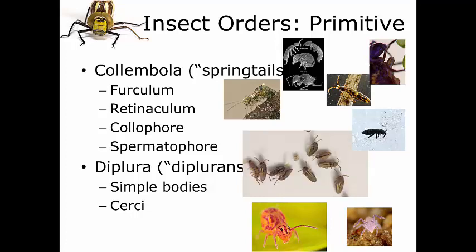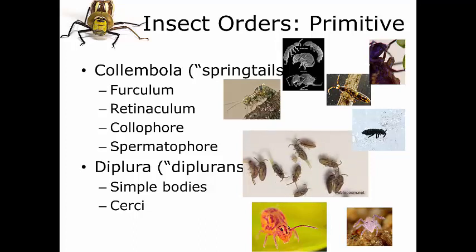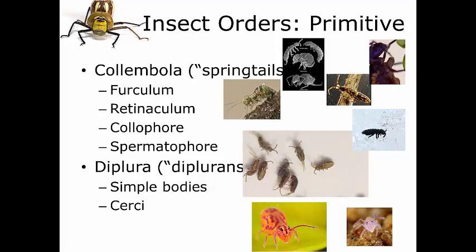Common names are a pain — they're awful. By their very nature, they've been made up by different people at different times. We tend to see lots of different common names based on regions, generations, or heritage of people. Using common names makes it very difficult to discuss an insect across different groups of people. Collembola, for example, are commonly called springtails by entomologists, but I've heard them called soil fleas, jump bugs, little critters, soil lice, jump beetles — that sort of thing. How confusing is that?